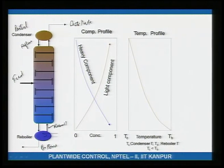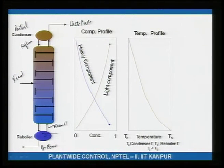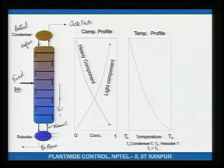On each tray, vapor-liquid contact occurs: some vapor condenses because it contacts cooler liquid, and the hot vapor vaporizes some liquid. When liquid vaporizes it is richer in the lighter component; when vapor partially condenses it is richer in the heavier component. As you go down the column the liquid becomes progressively richer in B, and going up the trays become progressively richer in A.